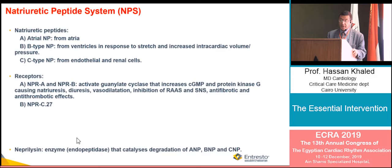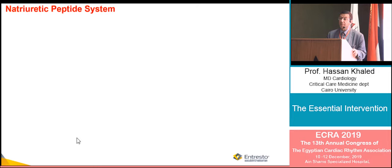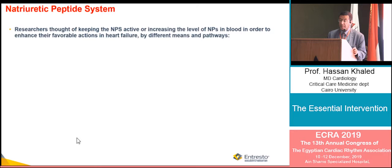The problem is neprilysin. Neprilysin is an enzyme that catalyzes the degradation of atrial natriuretic peptides and B-type natriuretic peptides. Researchers concluded that we should activate natriuretic peptides or increase their levels to achieve the beneficial effects.